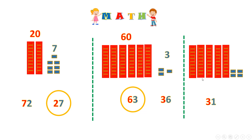Now the last one. Let's count the tens: 1, 2, 3, 4, 5 — I have 5 tens. And the ones: 1, 2, 3, 4. And here they've written only 31. So if I want to make 31 out of these, 31 is made of 3 tens and 1 one. So I will have 3 tens — 1, 2, 3 — this is 30. 3 tens are 30, and I will circle only 1. This is 31, made of 3 tens and 1 one.